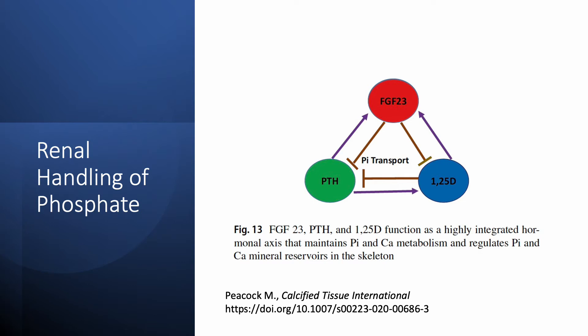To summarize: if a hormone stimulates the production of another one, the product will suppress the original hormone — that's the same as any endocrinological system. The key thing to remember is that PTH stimulates both FGF23 and 1,25-D, while FGF23 suppresses both PTH and 1,25-D. PTH increases production of 1,25-dihydroxy D in the kidneys by stimulating 1-alpha-hydroxylase, and 1,25-D then suppresses PTH.